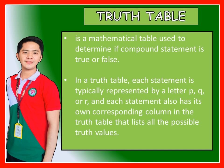A truth table is a mathematical table used to determine if a compound statement is true or false. In a truth table, each statement is typically represented by a letter P, Q, or R, and each statement also has its own corresponding column that lists all the possible truth values.